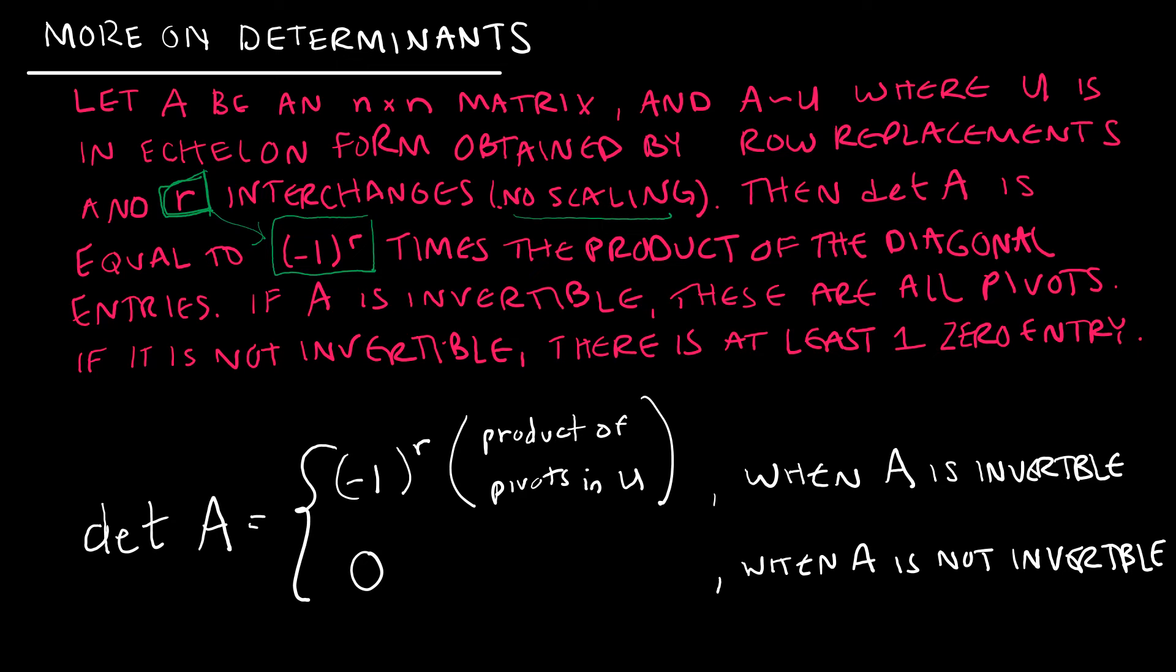In addition, it's saying if A is invertible, then those are all pivots, which we knew. But if it's not invertible, there's at least one zero entry, which is fine because that is now telling us that to find the determinant, we're still going to get this into echelon form, but the determinant will either be zero if A is not invertible or (-1)^R times the product of the pivots in U, which is the product of the diagonals when A is invertible. So really, it's just a great summary of something we already knew.